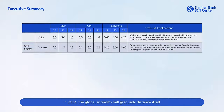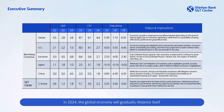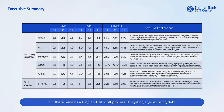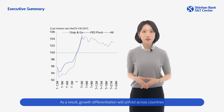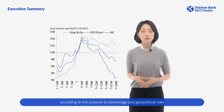In 2024, the global economy will gradually distance itself from the uncertainty of monetary tightening given the Fed's pivot, but there remains a long and difficult process of fighting against rising debt. As a result, growth differentiation will unfold across countries according to the pressure to deleverage and geopolitical risk.